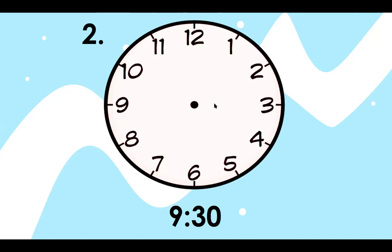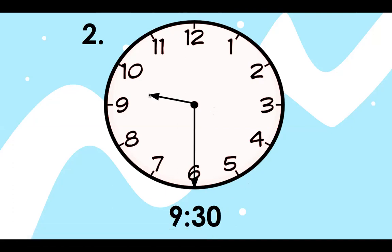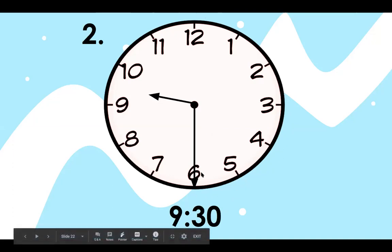Number two, you can pause the video to draw 9:30 on your clock. 9:30, your short hour hand should be pointed to the nine or in between the nine and the 10 and your minute hand is down on the six because if I count around the clock, zero, five, ten, fifteen, twenty, twenty-five, thirty to show 9:30.